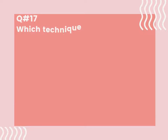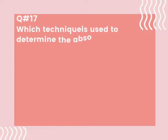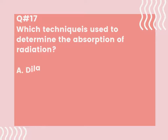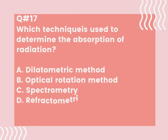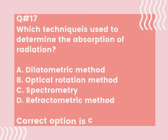Question number 17. Which technique is used to determine the absorption of radiation? A. Dilatometric method. B. Optical rotation method. C. Spectrometry. D. Refractometric method. Correct option is C.